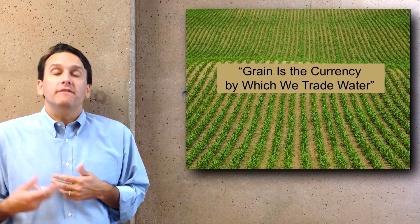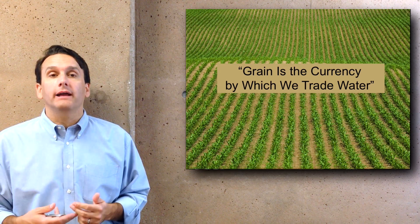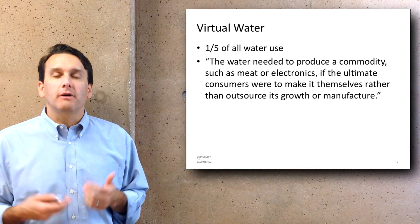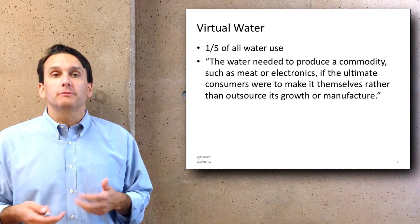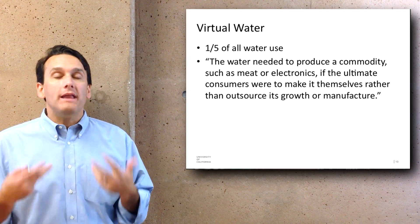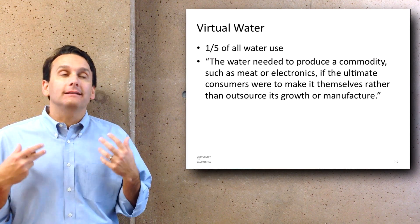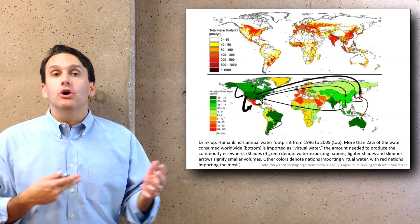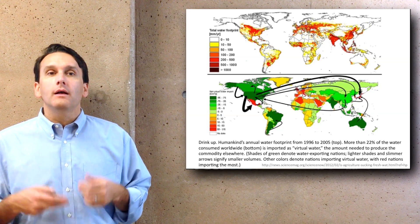The article uses a saying I really liked: 'Grain is the currency by which we trade water.' This suggests that in international commerce it's very hard to physically move water, but since grain represents how much water was put into producing it, we can do exchanges by shipping grain instead of water. The article also talks about 'virtual water,' which accounts for one fifth of all water use, defined as the water needed to produce a commodity such as meat or electronics if the ultimate consumers were to make it themselves. This points to the concept of embodied water in products, visible in a map showing global flows of water through trade.